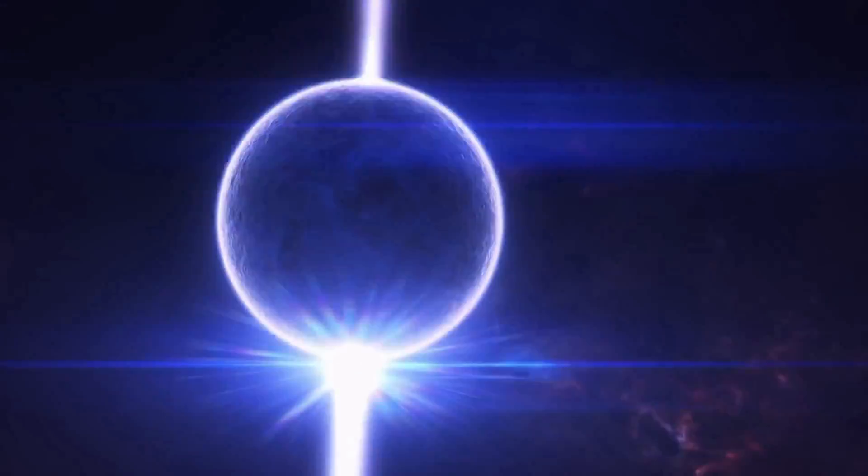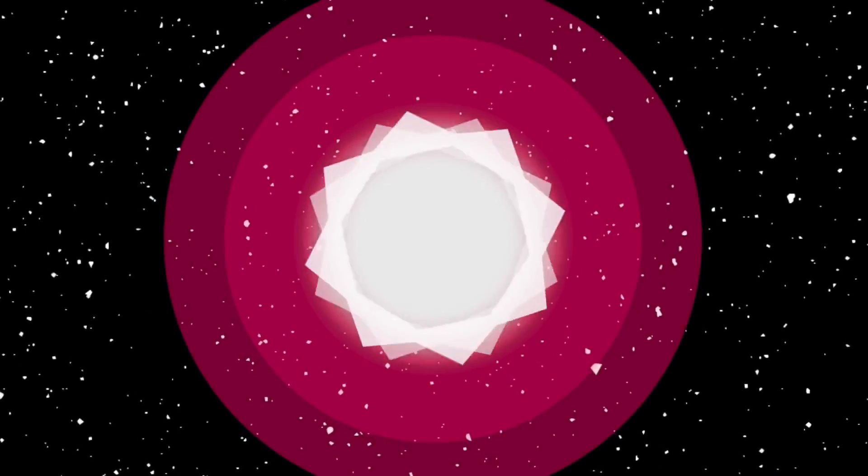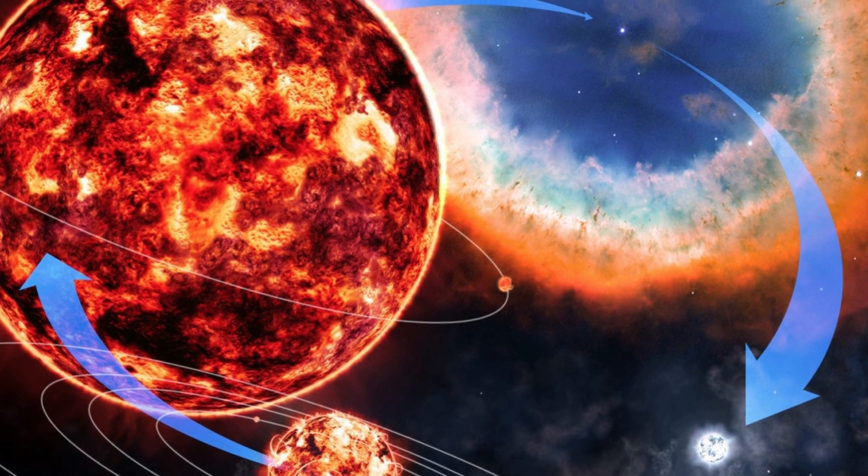Both black holes and neutron stars are the product of a dying star. When a star dies, it has spent all of its energy and then collapses. Their difference lies in their parent star.